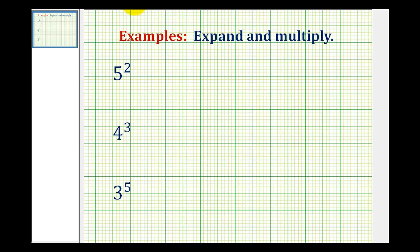We want to expand and multiply each of these exponential expressions. When we have an expression written in exponential form, we have a base and an exponent. The exponent is the smaller number that is slightly raised on the right. So here we have an exponent of two, here we have an exponent of three, and here we have an exponent of five.